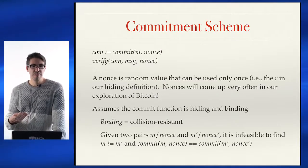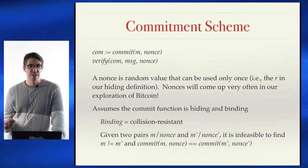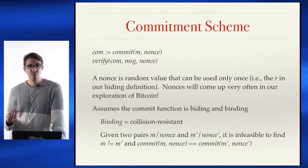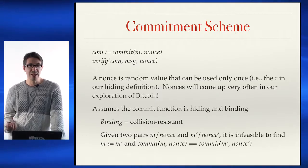The commitment scheme consists of two functions: commit and verify. With commit, you take a message and add a nonce — just some random value that can be used only once. The term nonce will appear quite often in our exploration of Bitcoin and other blockchains. It's just some value that doesn't mean anything on its own, but can be used for different purposes by usually concatenating it onto some other data.